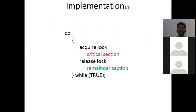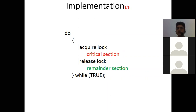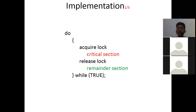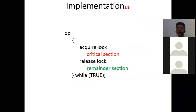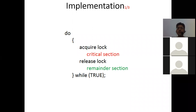Let's see how we can implement this. In a do-while loop, we first acquire the lock on the shared variable. Once the lock is acquired by process P0, it enters its critical section. If another process P1 wants to enter its critical section, it tries to acquire that lock, but the lock is already held by P0. Until P0 releases the lock, P1 cannot acquire it. So: acquire the lock, do the critical section, then release the lock.